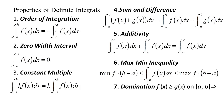To sum up, we have seven properties: first, reversing the direction of integration introduces a negative sign; second, if your interval has no width the integral is zero; third, a constant factor can be pulled through; fourth, the integral of a sum or difference can be broken into the sum or difference of two integrals; fifth, the additivity property lets us slice regions up and combine intervals; sixth, the domination theorem; and seventh, the min-max inequality.